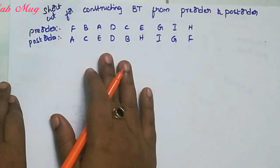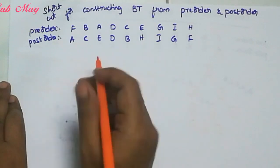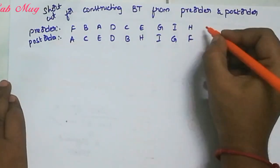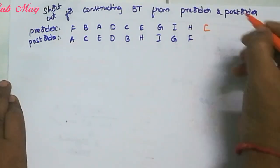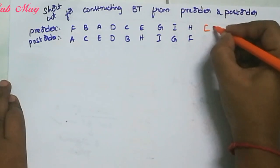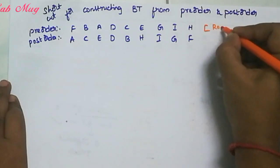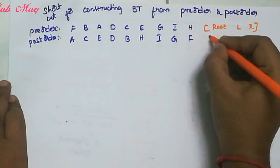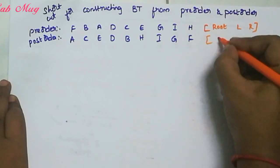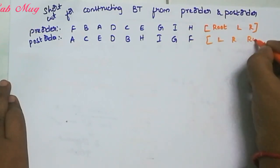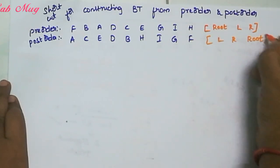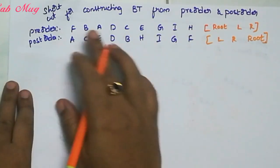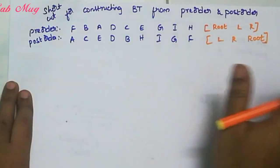This is the shortcut for constructing. What is the shortcut? First, pre-order ni manam compulsari process cheyali. Pre-order process: Root, Left, Right. And post-order process: Left, Right, Root. This is the main process of pre-order and post-order.